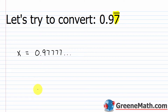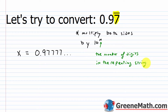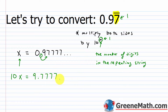The next thing I want to do is multiply both sides by 10 to the power of n, where n is the number of digits in the repeating string. In this particular case I have one digit that repeats forever, so 10 to the power of 1 is 10. If I multiply both sides of the equation by 10, on the left I get 10x, and on the right I move the decimal point one place to the right, giving me 9.77777... — the 7 repeats forever.